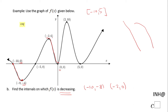That second interval starts at negative 2 and ends at 0, going down from 6 to 0. And there is one more interval from positive 2 to positive 5, where the function is decreasing from 10 to 0. We can use the union sign to show all three intervals together.